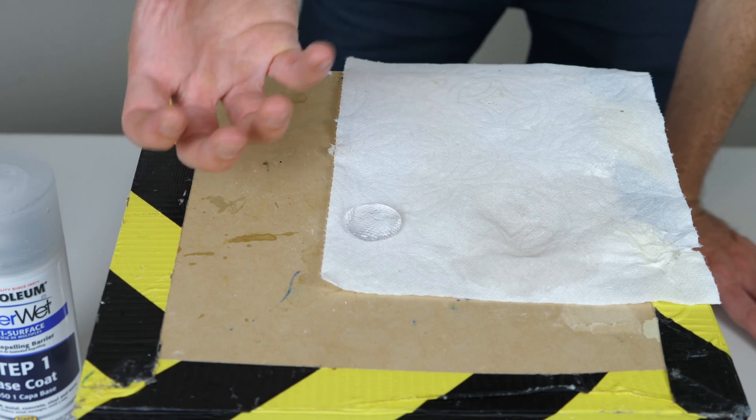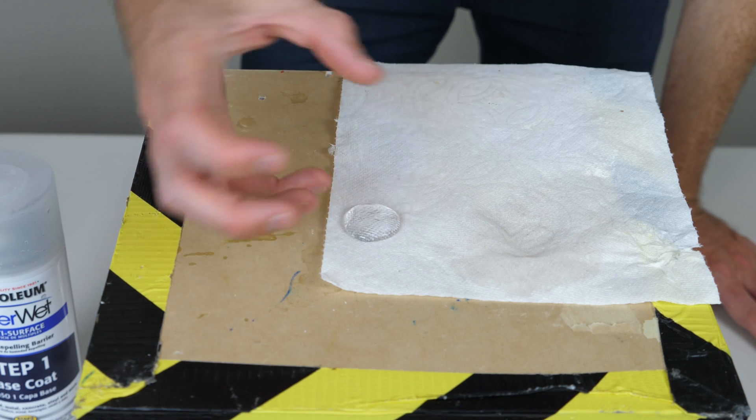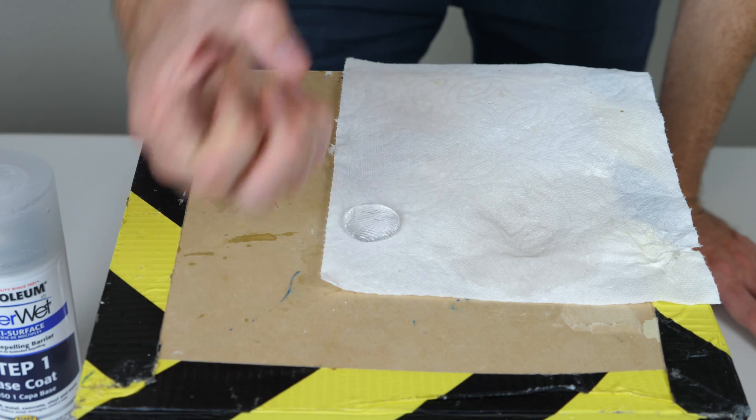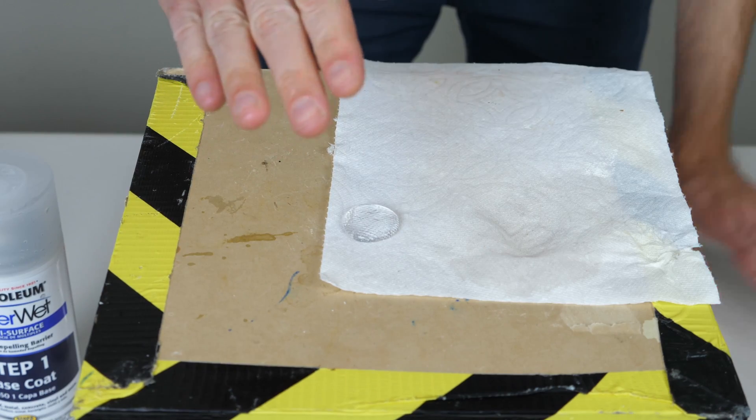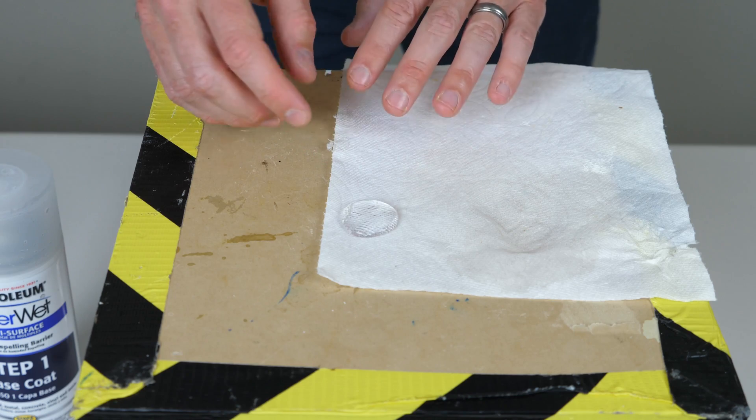So the water cannot absorb into the paper towel at all. It's because those OH groups are blocked, so there's nothing attracting the water. And since the water is attracted to itself, it stays in this little ball on top of it, and it slightly flattens out because gravity is pushing it down.